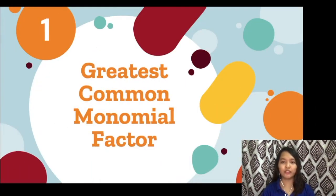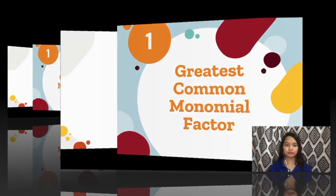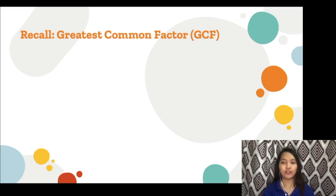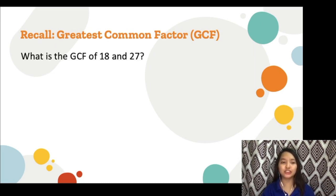Let's have the first subtopic: Greatest Common Monomial Factor. For us to use Greatest Common Monomial Factor in factoring polynomials, we have to recall the concept of Greatest Common Factor, or GCF. What is the GCF of 18 and 27? Let's start by listing the factors of 18 and 27.